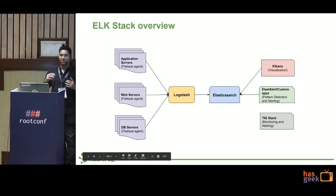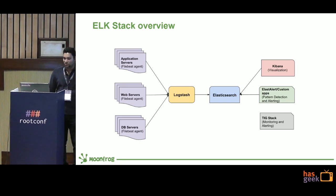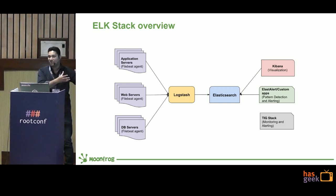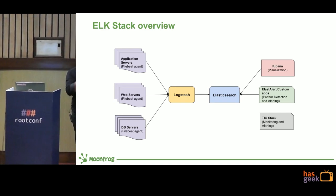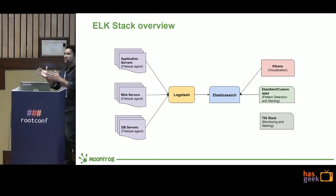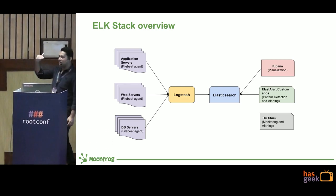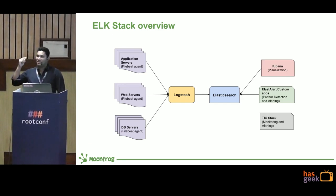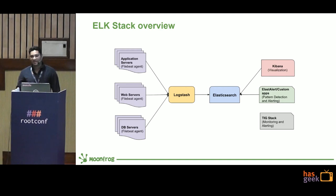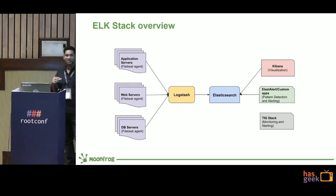Just to give you an idea of the ELK stack overview — on the left side you can see Filebeat, which is an agent you install on your servers. Filebeat will collect the logs and send them to Logstash. In Logstash, we can define filters and process those logs. After the logs are processed, they go to Elasticsearch, which is the database where your data is stored. We are using Kibana for visualization and querying data. For pattern detection and alerting, we are using Elasticsearch and custom apps. For monitoring and alerting, we are using the TIG stack — Telegraph, InfluxDB, and Grafana.